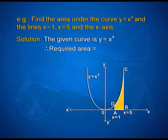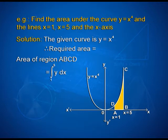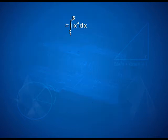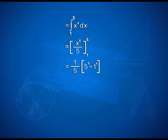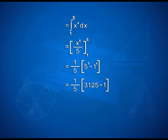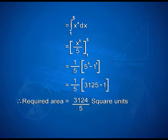Therefore, the required area is equal to the area of the region ABCD, which equals the integral from 1 to 5 of y dx = integral from 1 to 5 of x⁴ dx = [x⁵/5] from 1 to 5. On applying limits, we have (1/5)(5⁵ − 1⁵) = (1/5)(3125 − 1). Therefore, the required area is 3124/5 square units.